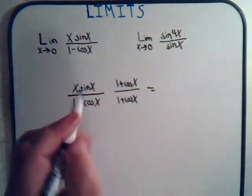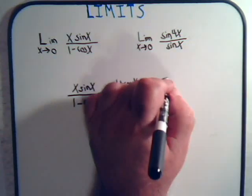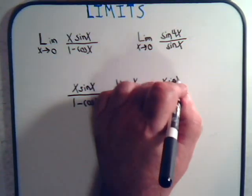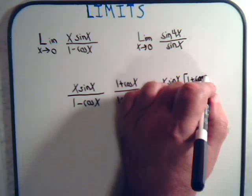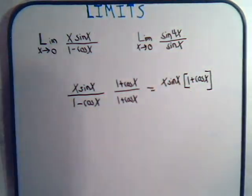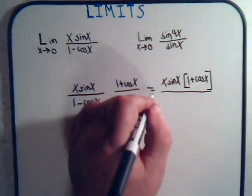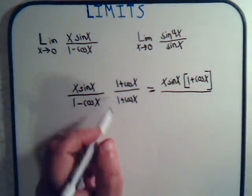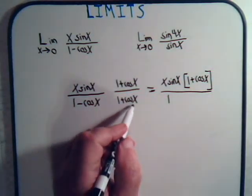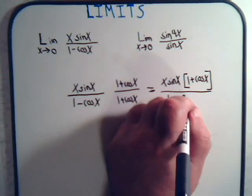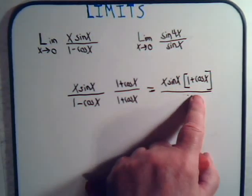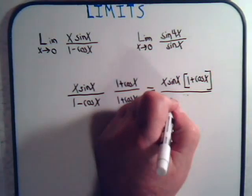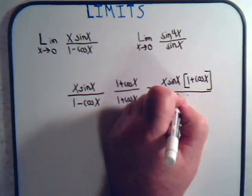So, let's see what happens here. In the numerator, we're just going to have x times the sine of x times this, 1 plus the cosine of x. And here, then, we're going to have, multiplying these two conjugates together, we have 1. These terms cancel out, and we have 1 minus the cosine squared of x. And, of course, that is just the sine squared of x. So, let's write that in.